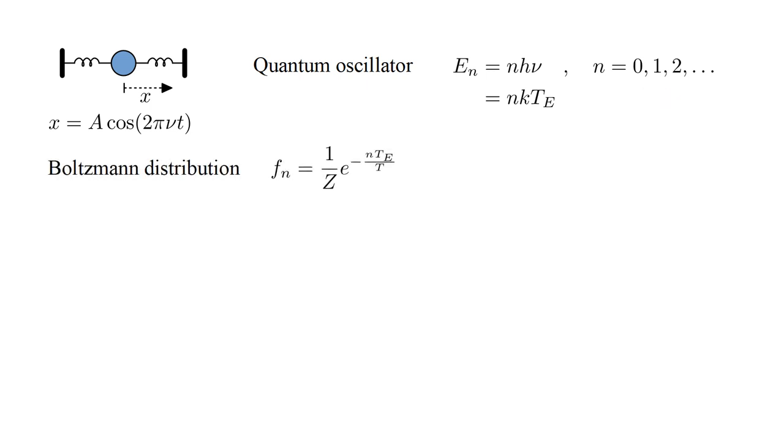In the previous video on statistical mechanics, we developed the Boltzmann distribution. This gives the occupation frequency, f_n, of the oscillator state with energy n k T_E, as f_n equals one over Z, e to the minus n k T_E over k T. Canceling common k's, we are left with e to the minus n T_E over T. The occupation frequency is the fraction of time a system will spend in a state with the given energy when the temperature is T. This can also be interpreted as the probability that the system will be in that state. For convenience, let's set a equal to e to the minus T_E over T. This is less than one. Then, f_n equals one over Z, a to the n.